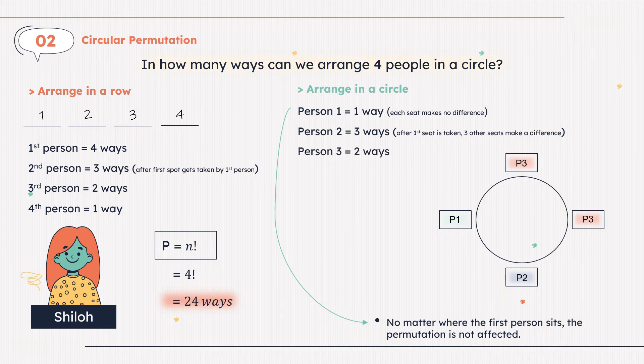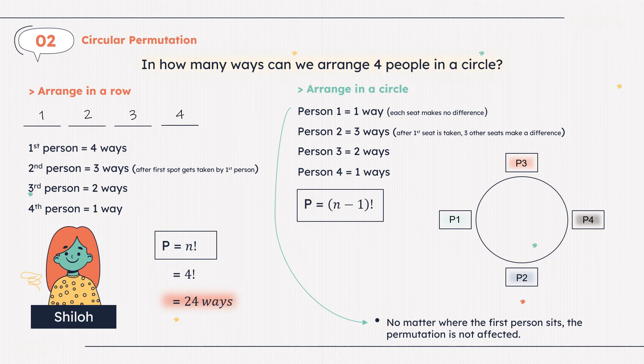Person 3 has 2 ways. It follows the same process we just did. If person 3 sits at the top seat, person 4 only has 1 way. There's no other choice. This is basically the process of circular permutation, and the formula used for this is P equals the quantity of n minus 1 factorial, where n is 4. So 4 minus 1 is 3 factorial, and 3 factorial is 6. Therefore, we can arrange 4 people in a circle in 6 ways.